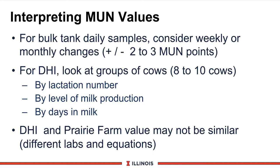I would look at lactation number — are first lactation cows higher or lower than older cows? Level of production — do cows giving 120 pounds of milk have a different MUN value than those giving 60? Days in milk — fresh cows versus mid-lactation versus late cows. Also be aware that DHI and milk co-ops such as Prairie Farms may not always match because of different labs and different equations.